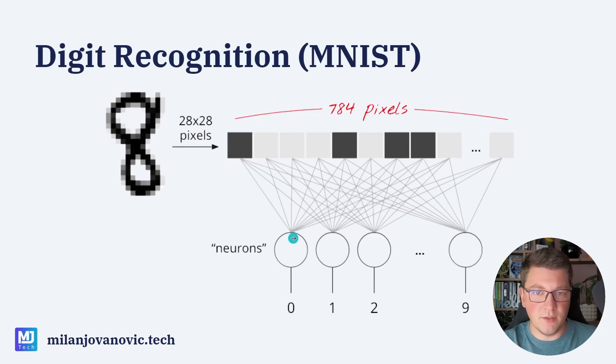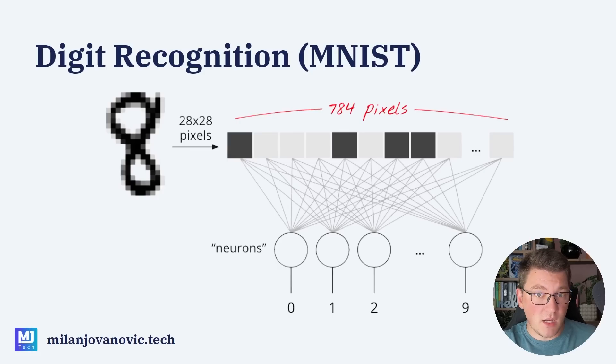The output could be any digit from 0 to 9. This is the high-level idea of how our neural network is going to produce an output.